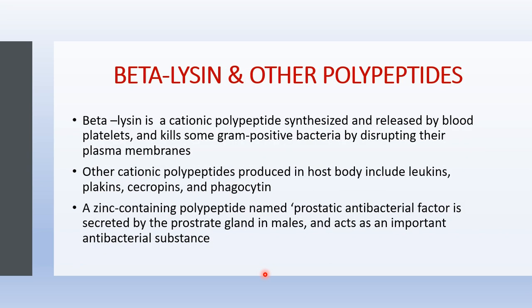Moving to beta-lysine and other polypeptides: beta-lysine is a cationic polypeptide synthesized and released by blood platelets. It kills some gram-positive bacteria by disrupting their plasma membranes. Other cationic polypeptides produced in the host include leukins, plakins, and phagocytin. Additionally, a zinc-containing polypeptide named prostatic antibacterial factor is secreted by the prostate glands in males, which acts as an important antibacterial substance.